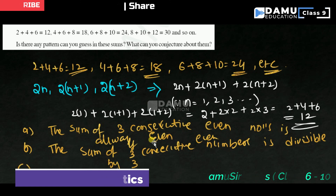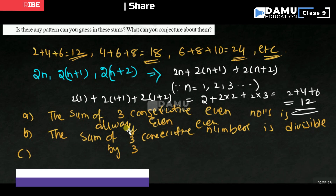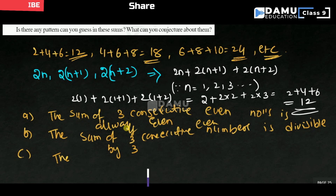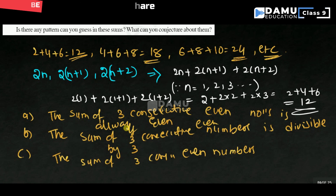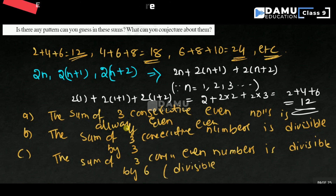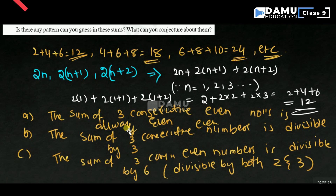Third conjecture: the sum of 3 consecutive even numbers is divisible by both 2 and 3, so it is divisible by 6. It is even, so it is divisible by 2. It is divisible by 3 as shown. Since 6 = 2×3, in order to be divisible by 6, we need to be divisible by both 2 and 3. This is the way to write the conjectures and statements regarding the given problem.